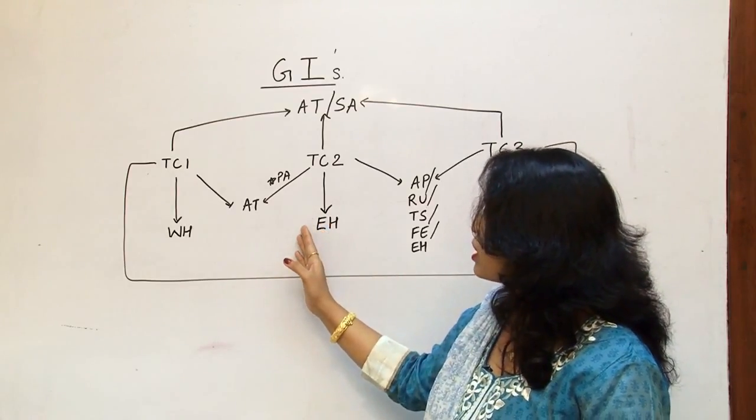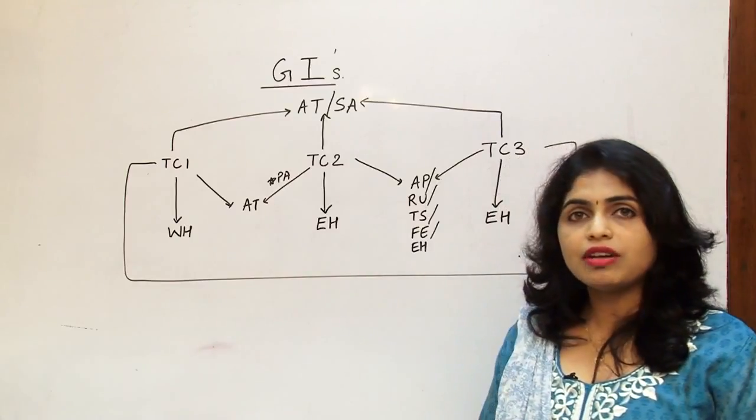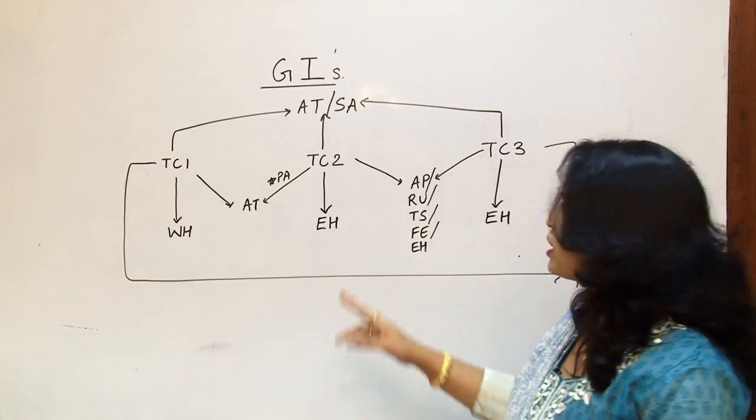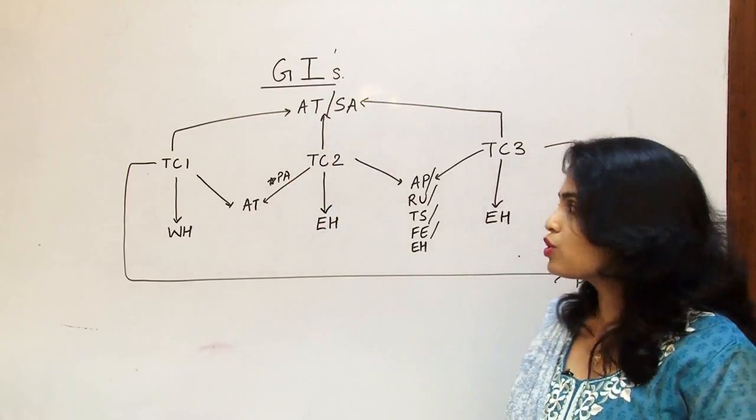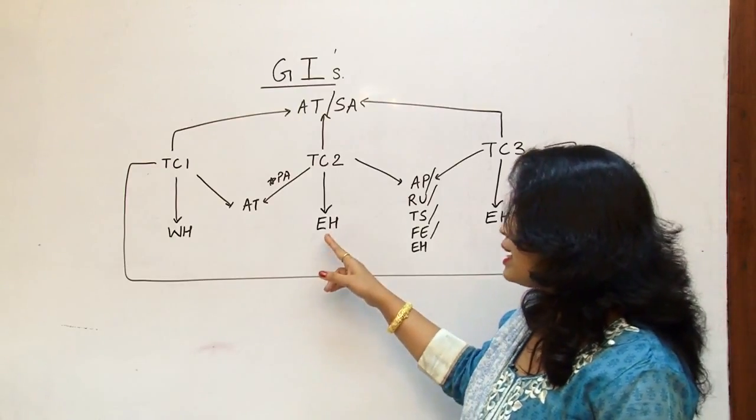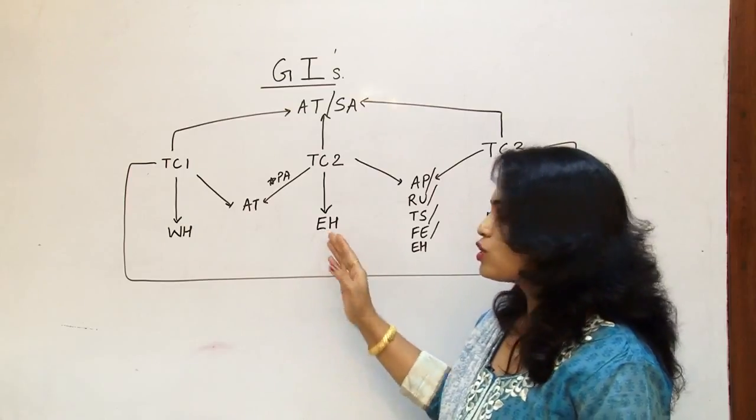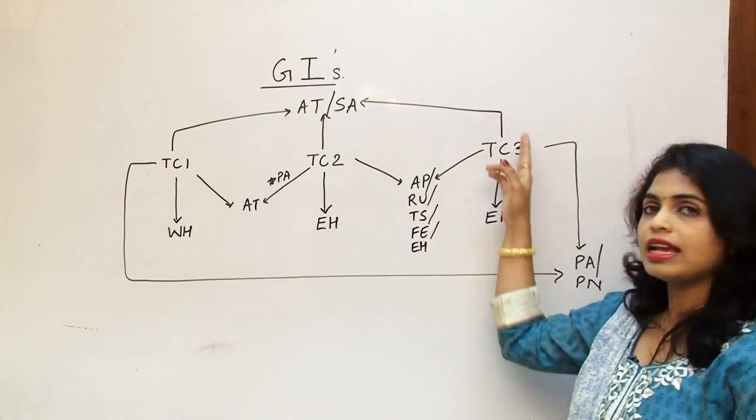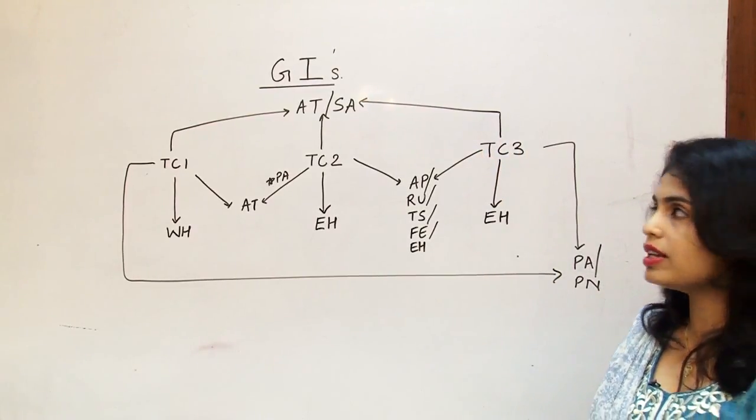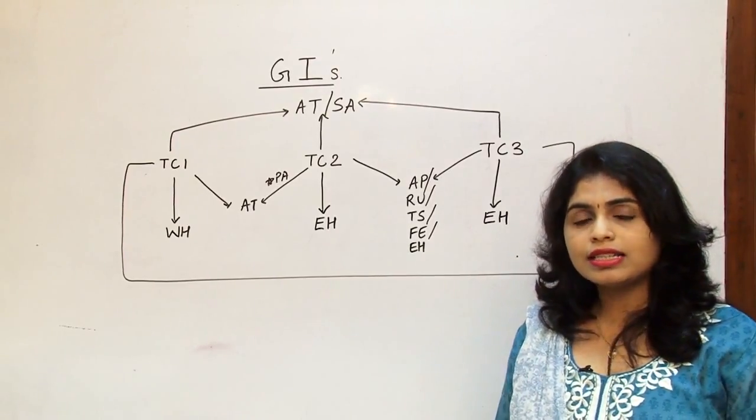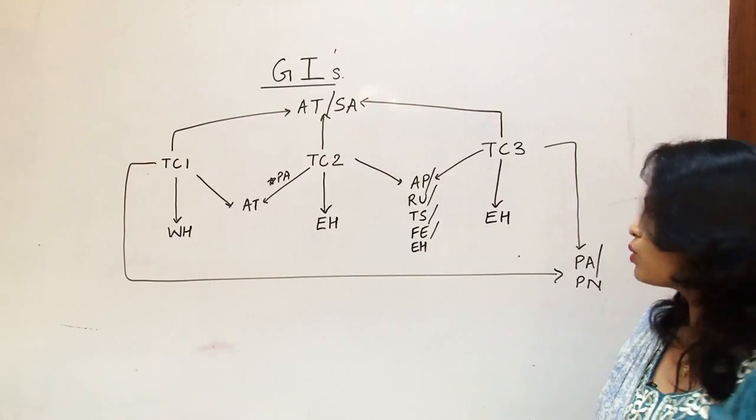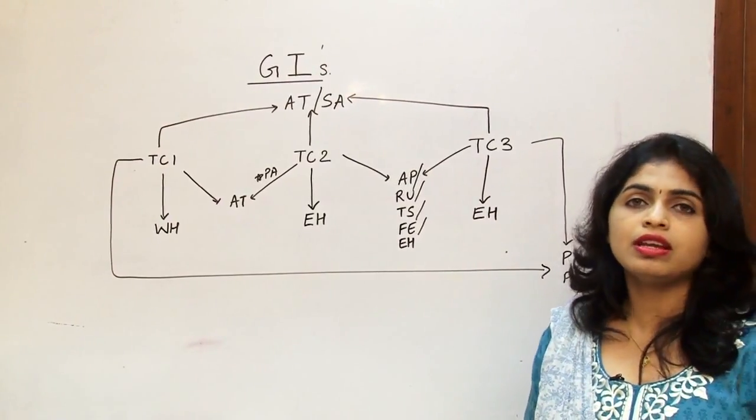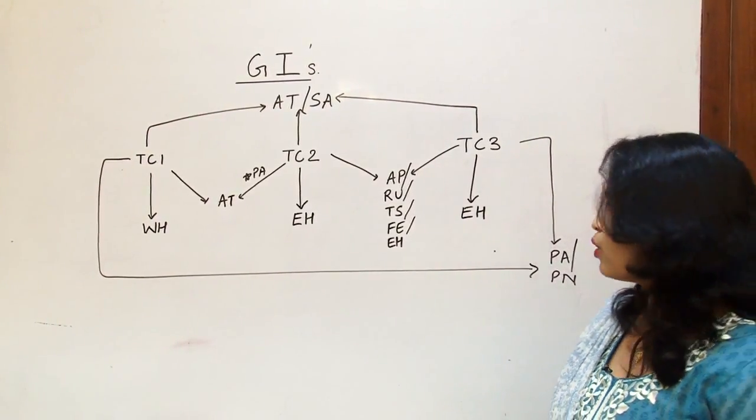Now the next one that we have over here is traffic conference area 2. So we have traffic conference area 2 which deals into Europe, Middle East and Africa. So if the flight is roaming around only in traffic conference area 2 we are talking about the global indicator of that flight being EH which stands for Eastern Hemisphere. Now if we come over here TC3 the flight is not leaving area 3 or traffic conference area 3 which has the Asian and Southwest Pacific so that's SEE that's Southeast Asia, SASC that's South Asian subcontinent, JAPCOR that's Japan and Korea and Southwest Pacific. So we have the flight which is not leaving traffic conference area 3 then again its GI or the global indicator would be EH.